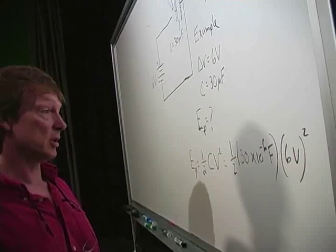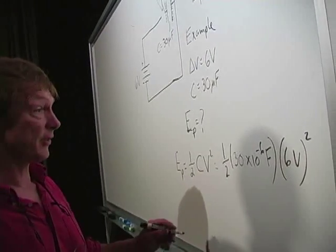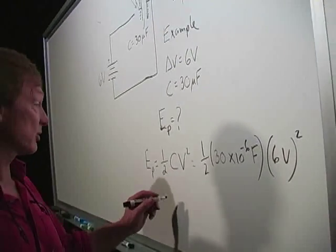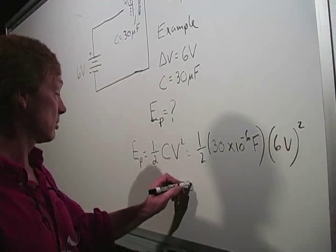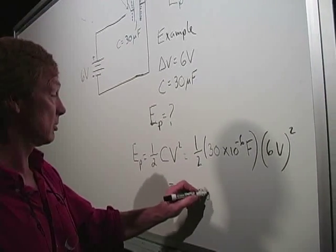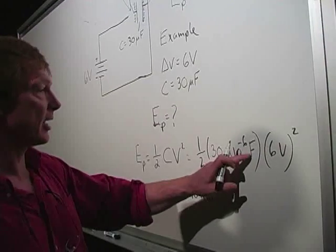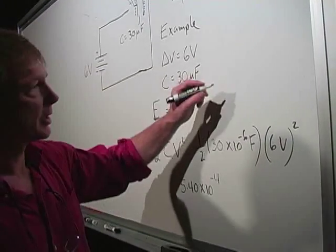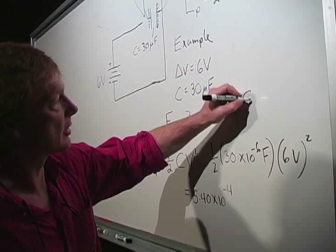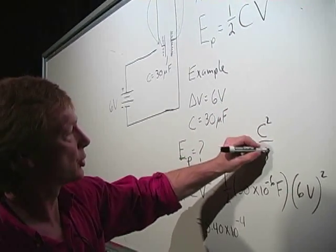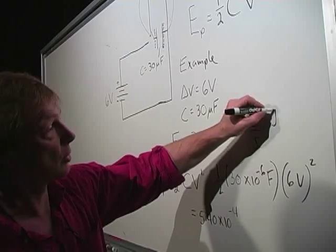Farads times volts squared. Now I'll tell you this, a farad is a coulomb squared per joule, and a volt is a joule per coulomb.